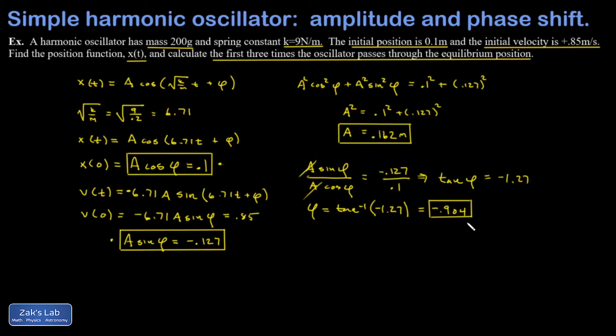Now that I've applied my initial conditions to my general solution, I can write down the position as a function of time. Now I know precisely where this oscillator mass is for all moments in time. If you're interested in the velocity, by the way, you would just take a time derivative of that.